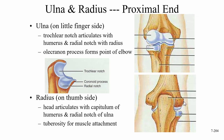The ulna is on the little finger side. It has a trochlear notch that fits against the trochlea of the humerus, and a radial notch where the head of the radius fits. The point of your elbow — where you hit it and say 'olecranon' — is the olecranon process. There's also the coronoid process; remember, if you're not just annoyed but really irritated, you're 'coronoid.'